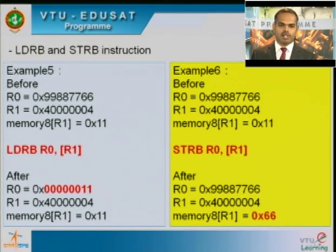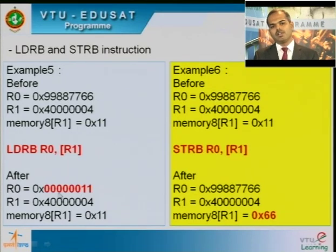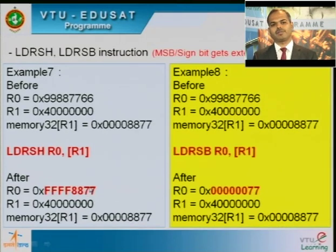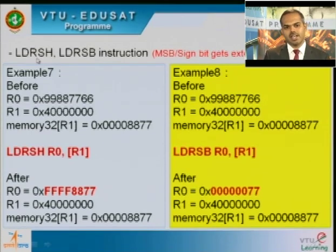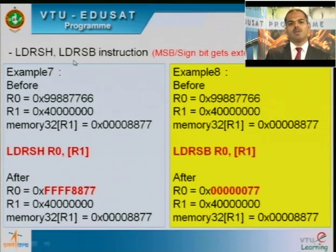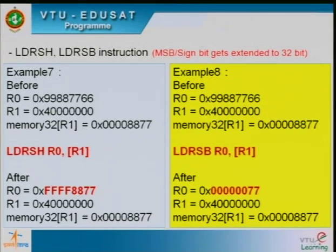All six instructions discussed so far are unsigned instructions because they append zeros in the space of the register where no value is loaded. The last two examples cover LDRSH and LDRSB — load register with signed half word and load register with signed byte. These two instructions extend the MSB (most significant bit, or sign bit) to fill the full 32-bit register value.